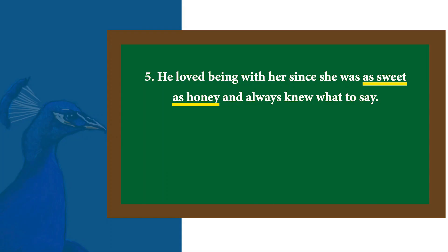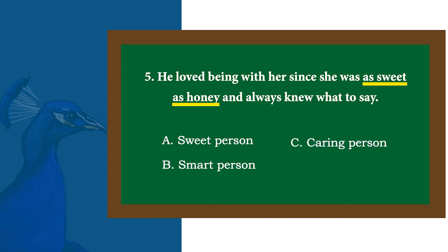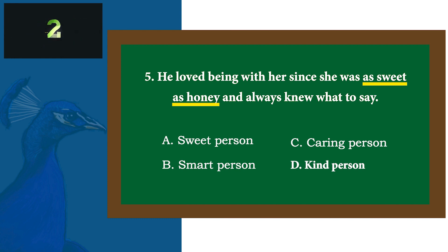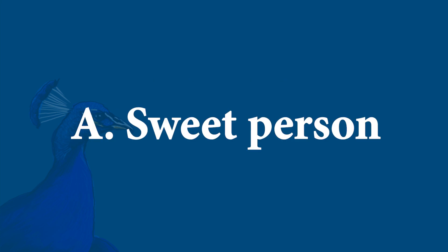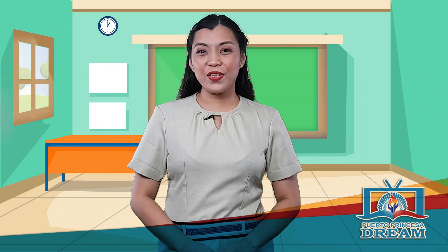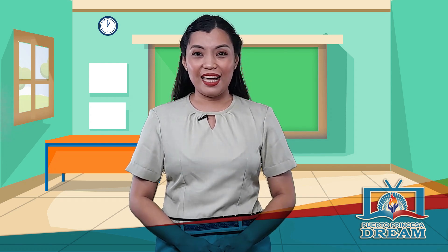Number 5: He loved being with her since she was as sweet as honey and always knew what to say. A. Sweet person B. Smart person C. Caring person D. Kind person. Time's up! The answer is letter A, Sweet person. What is your score? Did you get a perfect score? If yes, good job! If not, don't worry! We will deepen your understanding so that you can get a higher score at the end of this episode.